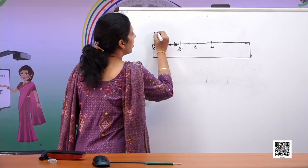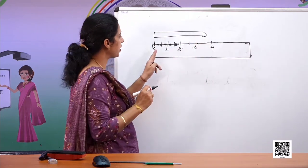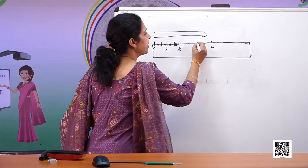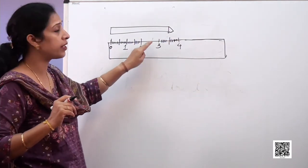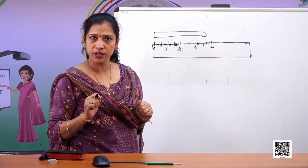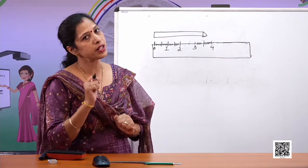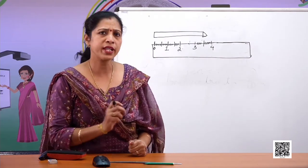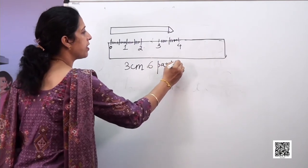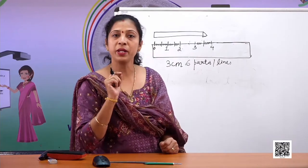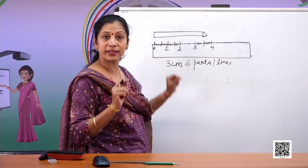Now you can see how to measure the pencil. The pencil is kept at the zero marking. We will see how long it is going — it comes up to somewhere between three centimeters and four centimeters. So if I say the length is three centimeters, that is wrong because it is more than three. If I say four centimeters, that is also wrong because it is not touching four centimeters.